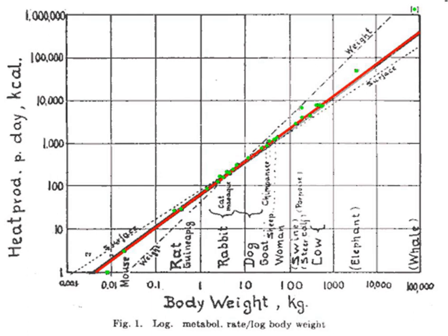A model due to West, Enquist, and Brown (hereafter WBE) suggests that three-quarters scaling arises because of efficiency in nutrient distribution and transport throughout an organism. In most organisms, metabolism is supported by a circulatory system featuring branching tubules — i.e., plant vascular systems, insect tracheae, or the human cardiovascular system.